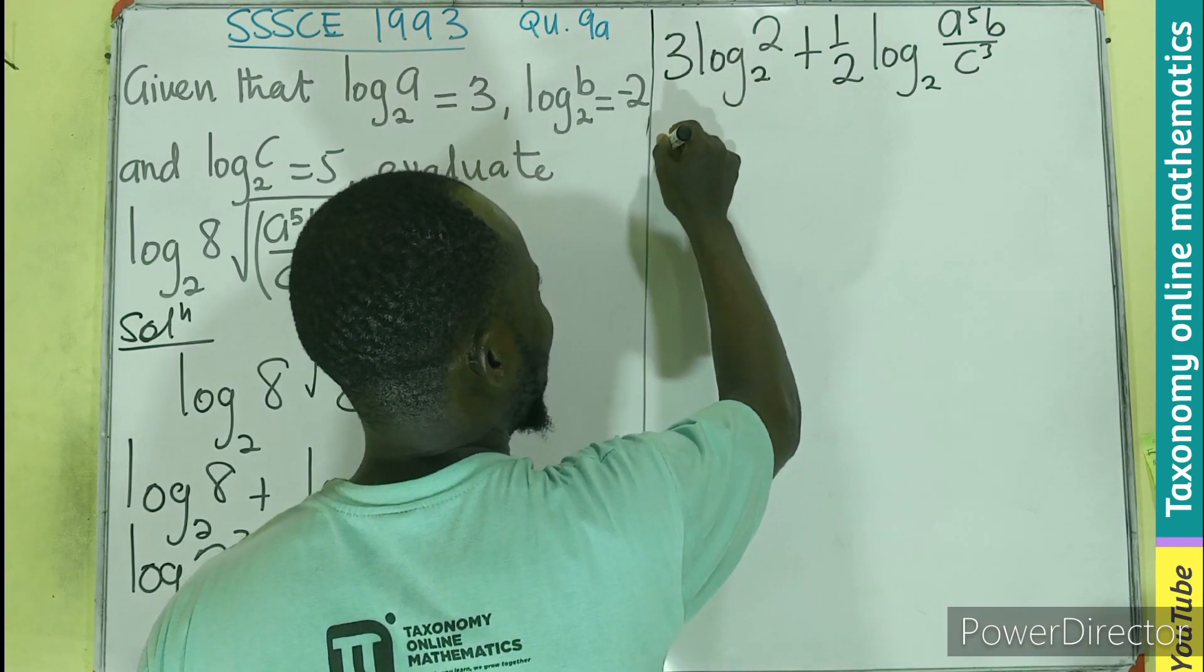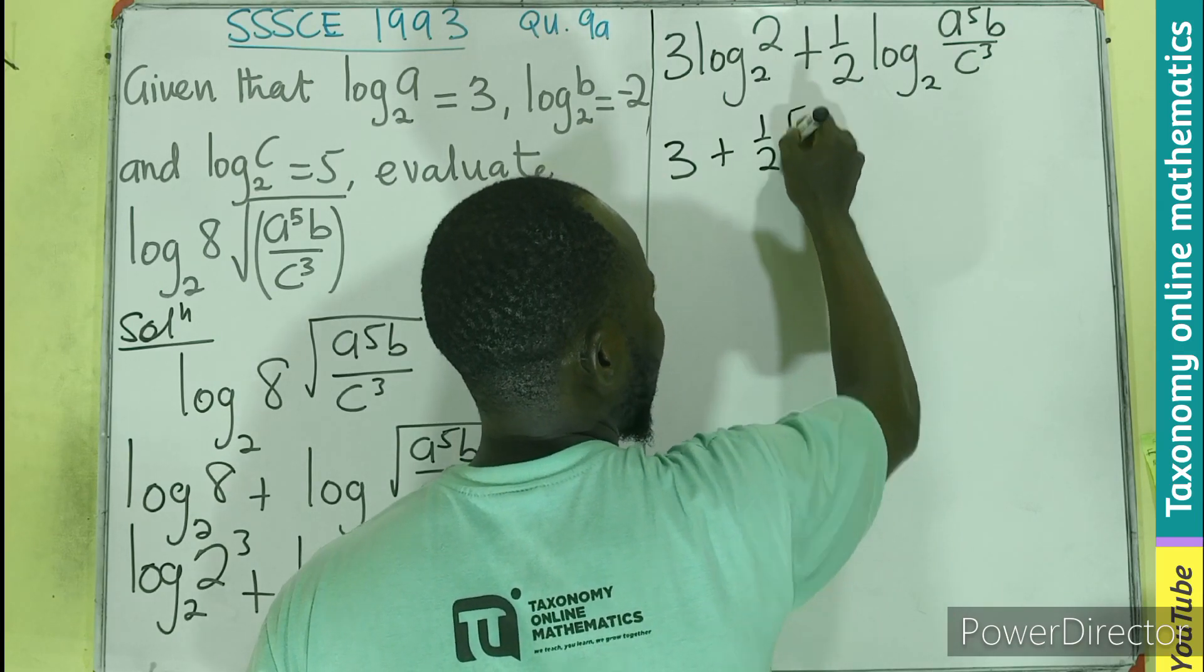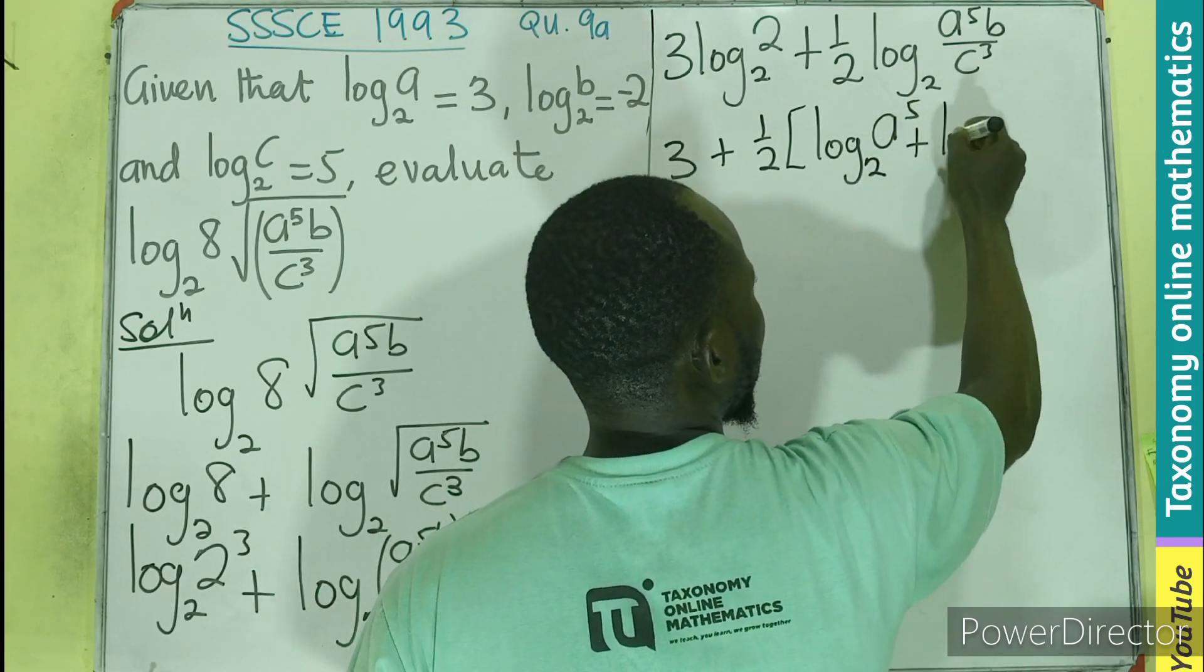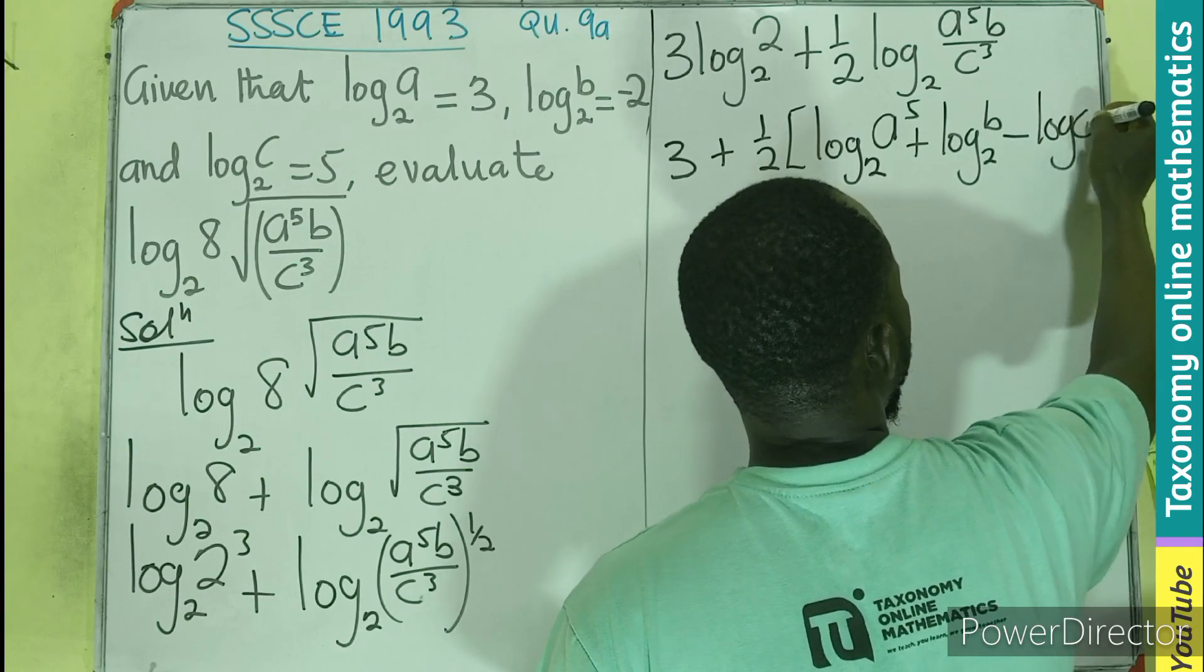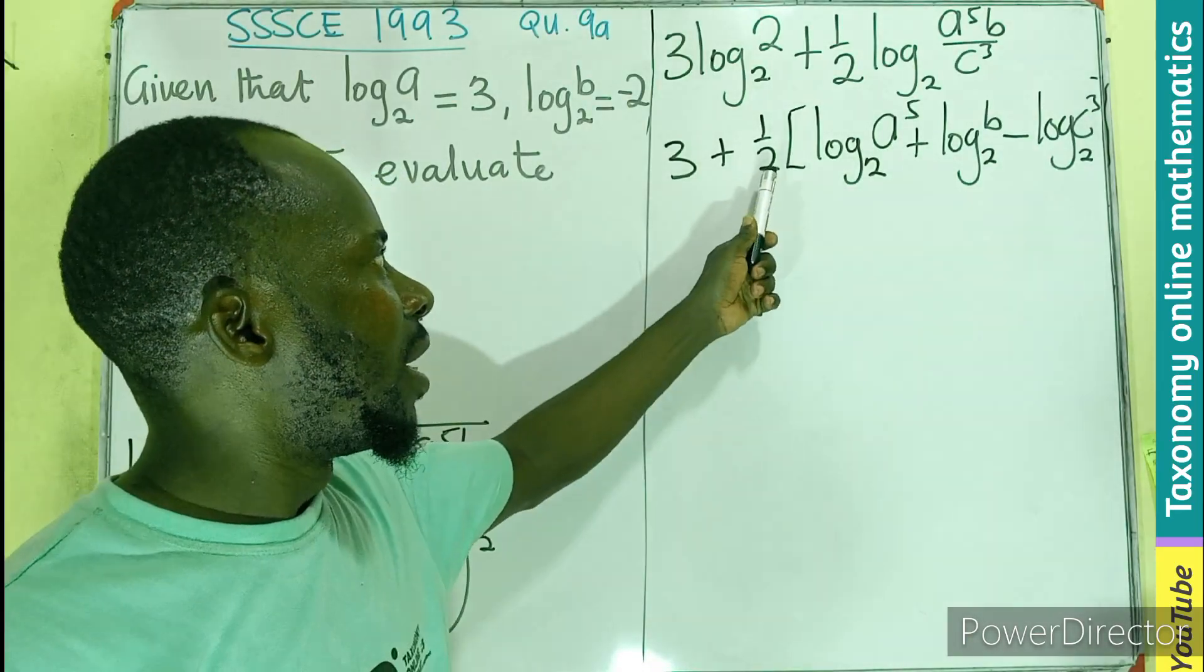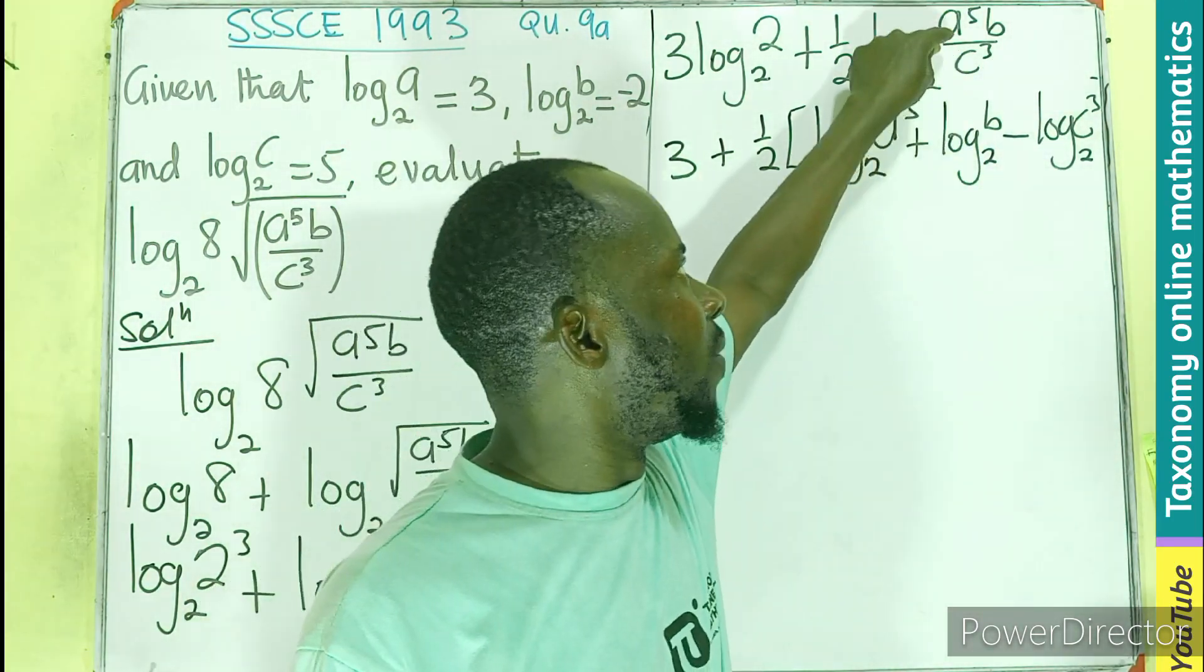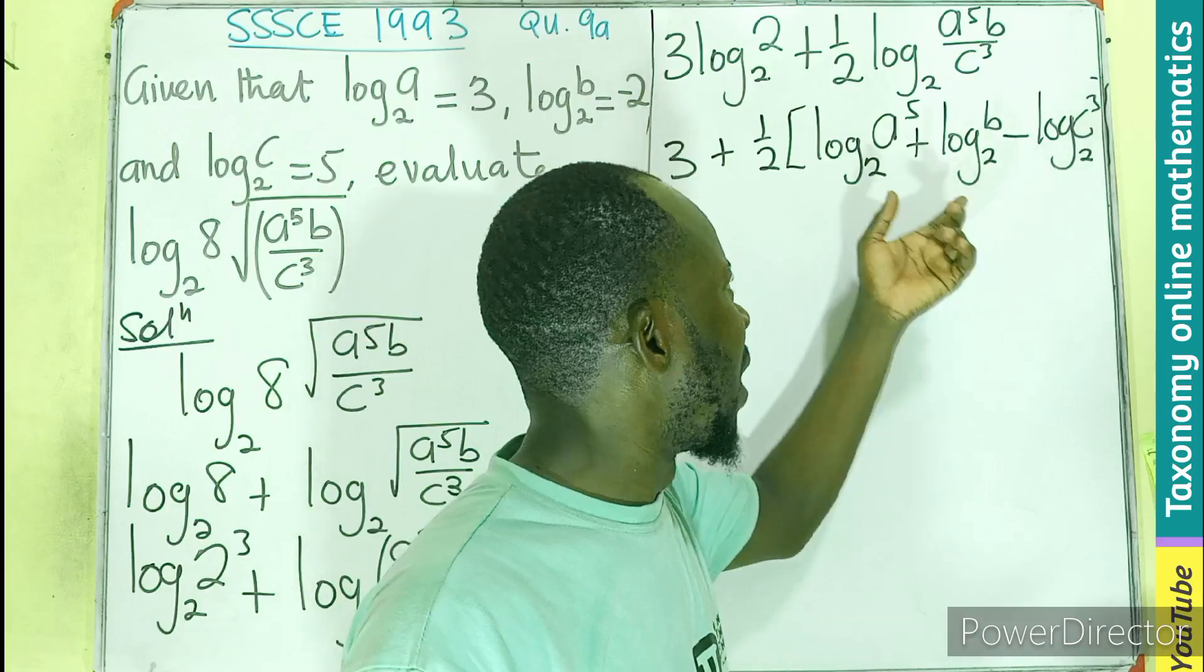This will mean that I will be having 3 plus 1 over 2. Then, the whole of this becomes the log of A exponent 5, base 2, plus log of B, base 2, minus log of C exponent 3, base 2, multiplying the half. Don't forget, multiplication of these two means addition of the A and B. The division with the C means the subtraction. So you can see that we have isolated all of the values you are looking for.